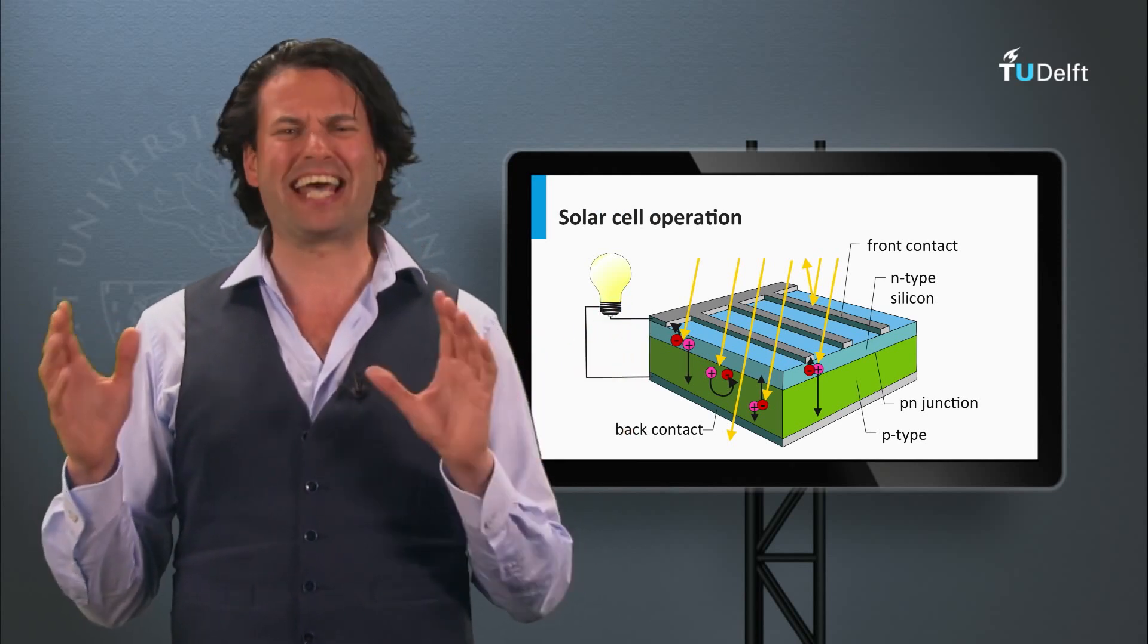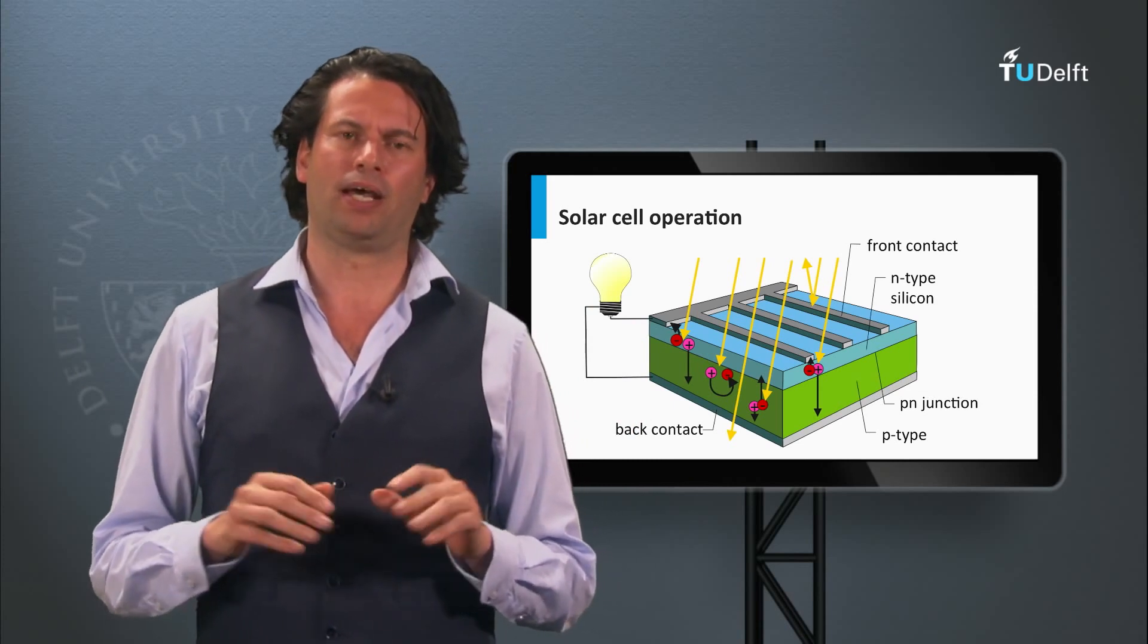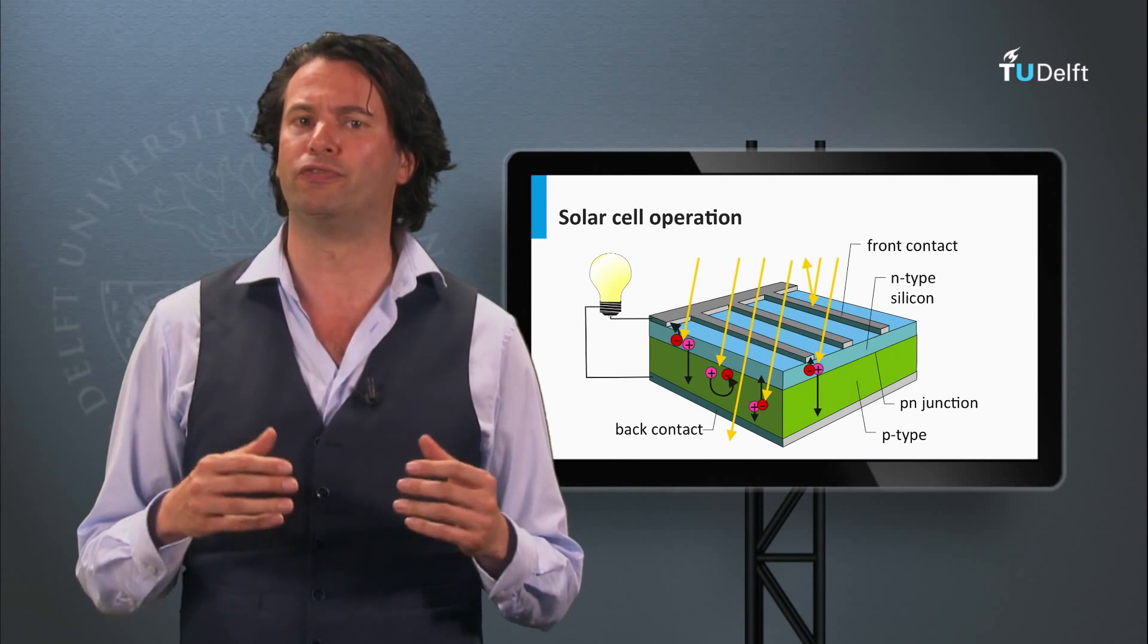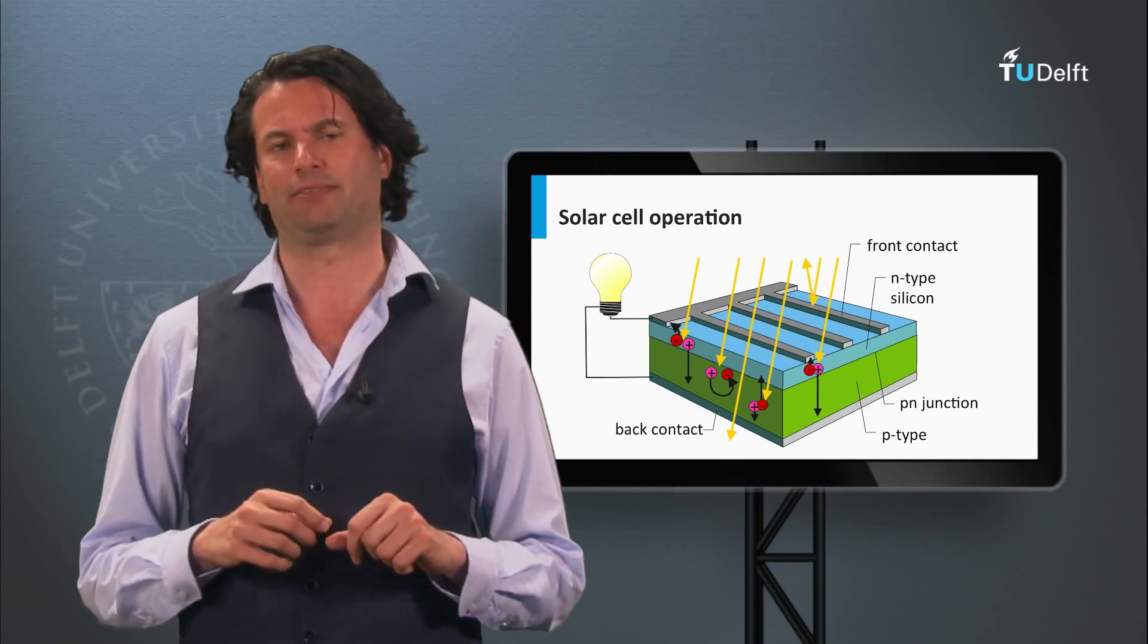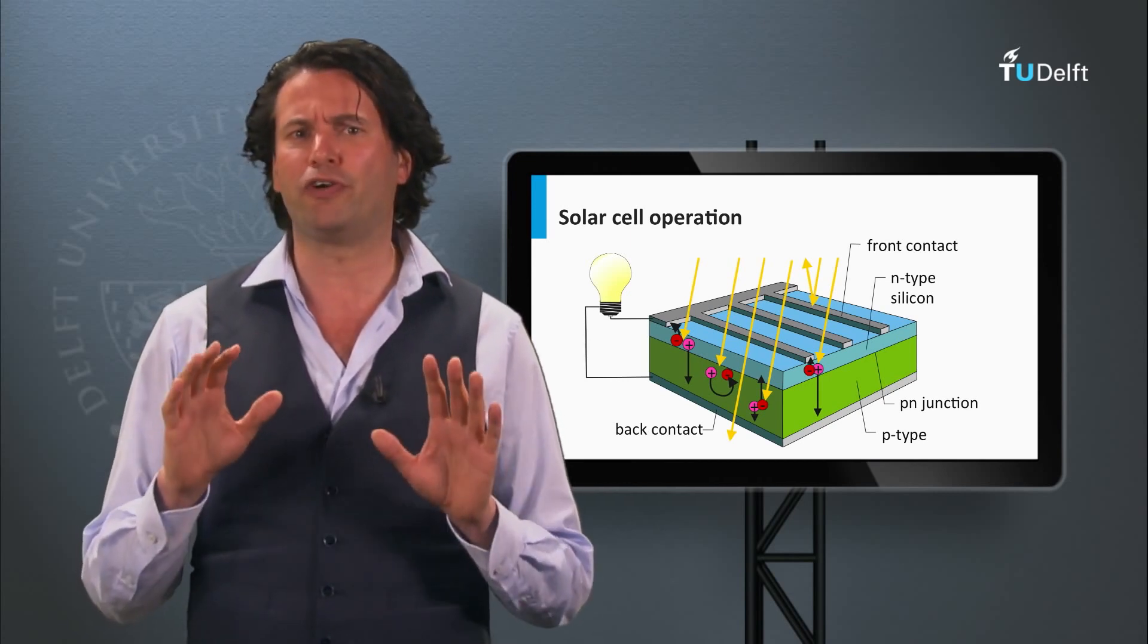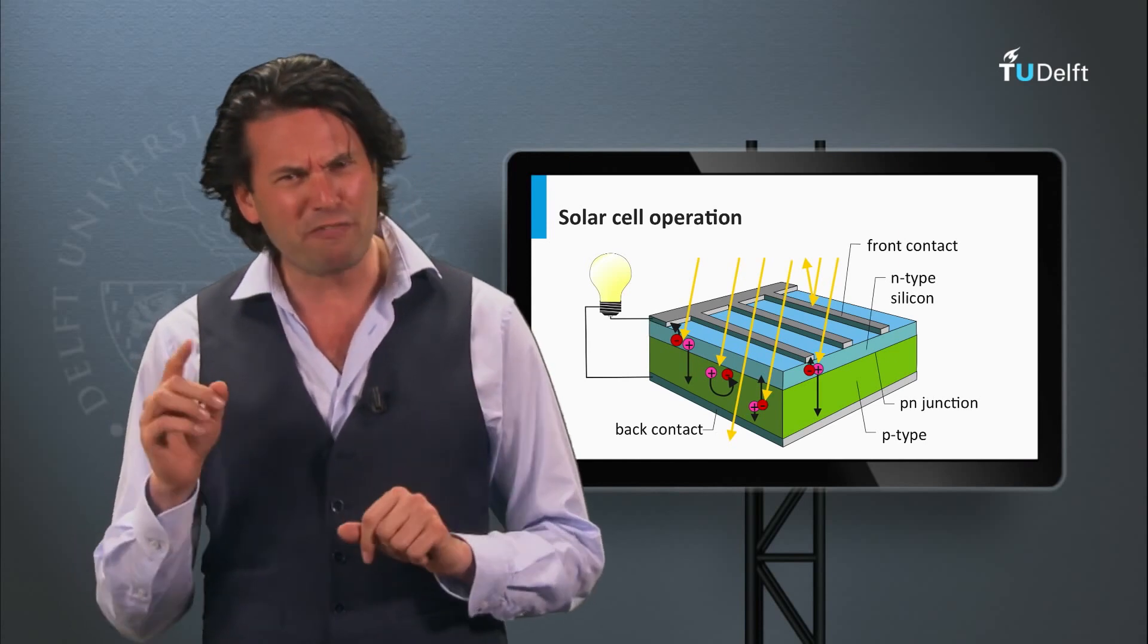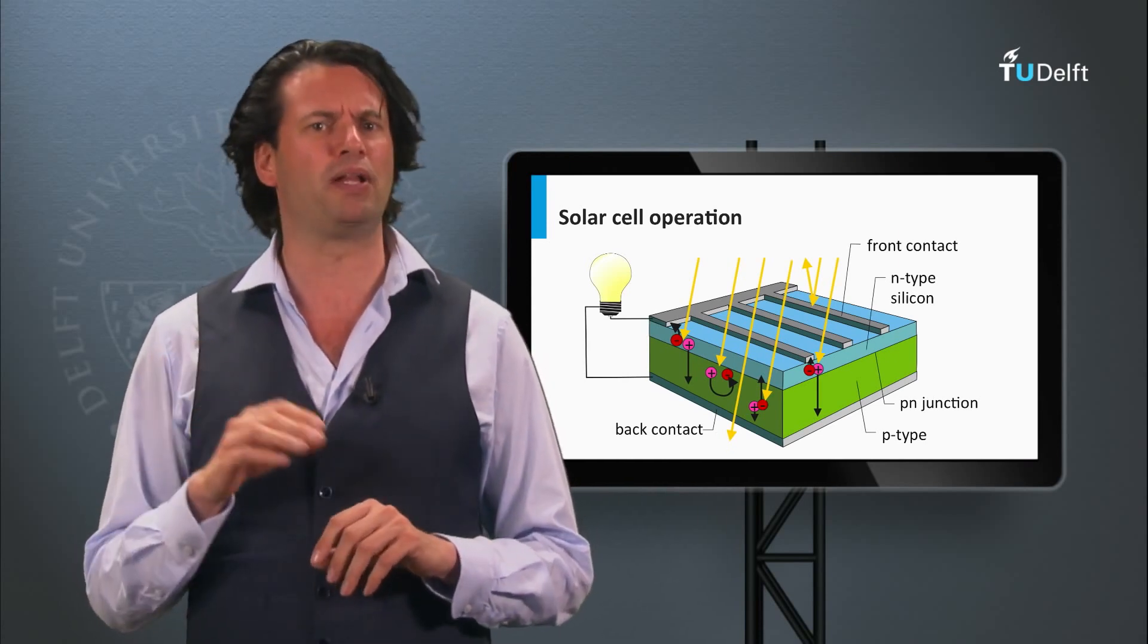So, how can we get electricity directly from sunlight? The mechanism in which solar light is directly converted into voltage or current is called the photovoltaic effect. In week 2 we will discuss the photovoltaic effect in greater detail. But to give you a first idea, I will show its principle using this simple animation.